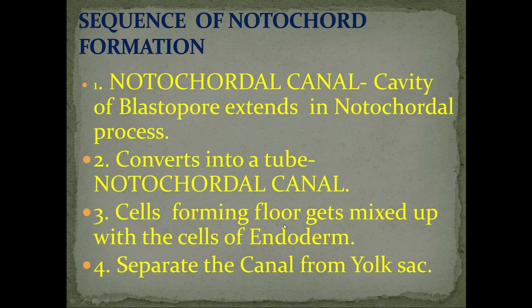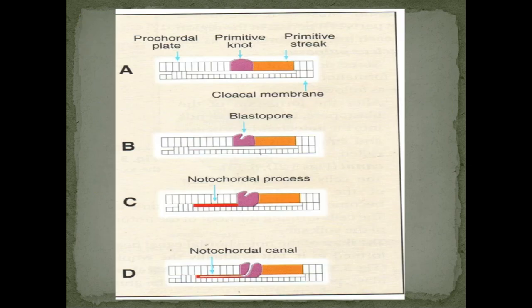The cells forming the floor get mixed with the cells of the endoderm, separating the canal from the yolk sac. In the primitive knot there is a depression — the blastopore — and a cavity is formed there. This cavity extends into the notochordal process, converting it into a canal known as the notochordal canal.